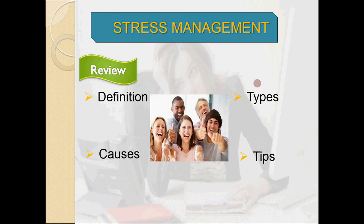In review: the definition of stress is any physical, mental, or emotional tension. There are two main types — acute stress and chronic stress. Causes include problems at home, at the workplace, and in general life. Management tips include doing prayers, playing sports, and taking short breaks.